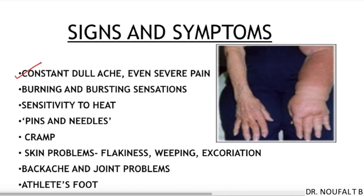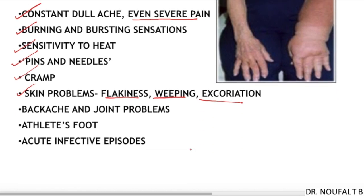Coming to the signs and symptoms, lymphedema can be associated with a constant dull ache; sometimes the patient may experience severe pain. There may be burning and bursting sensation, sensitivity to heat, pins and needles sensation, cramps, and skin problems like flakiness, weeping, and excoriation. In patients with rheumatoid arthritis there may be backache and joint problems.